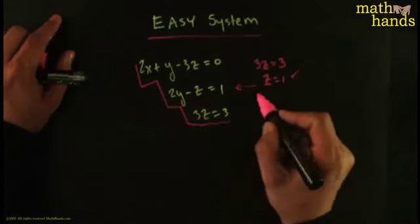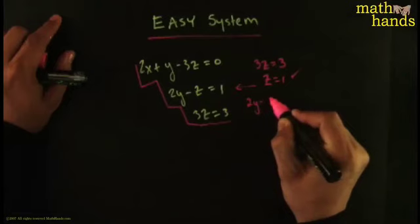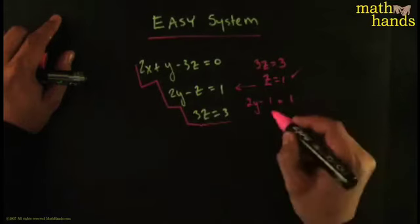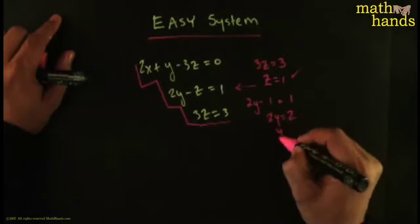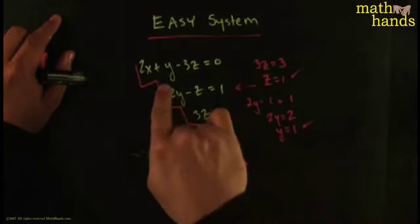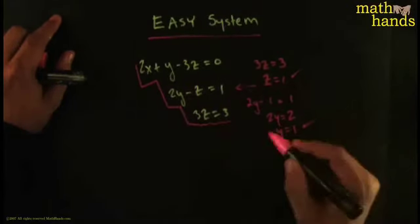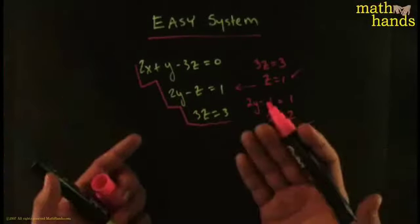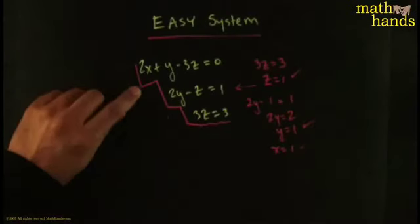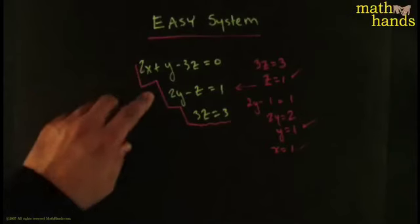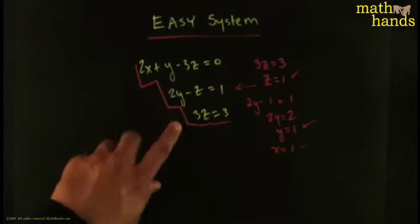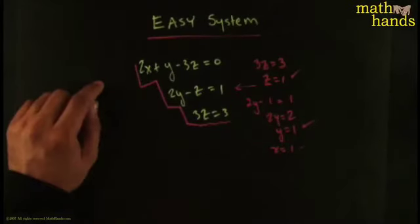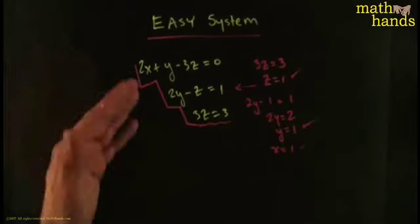Because of that staircase pattern, this system is incredibly easy to solve. The bottom equation gives z = 1. Substituting back: 2y - 1 = 1, so y = 1. Then knowing y and z, you can find x = 1 as well. This is what makes the system easy — no x's below the first equation, no y's below the second. This is called a row-reduced or echelon form system.